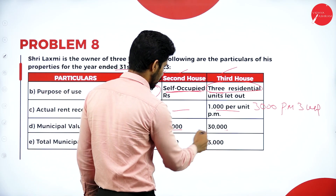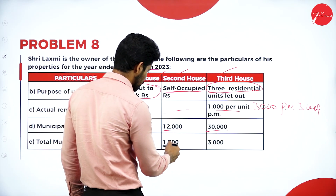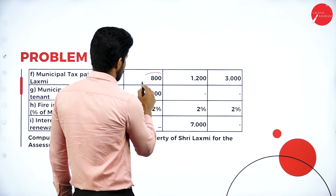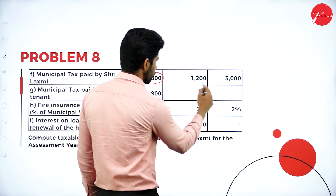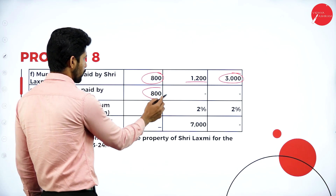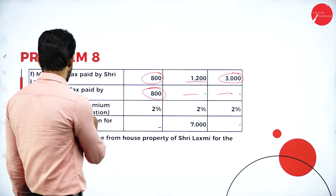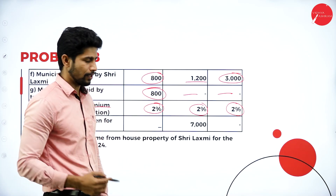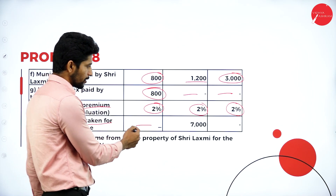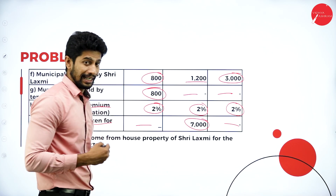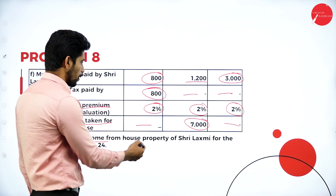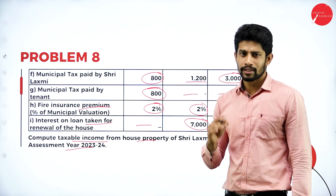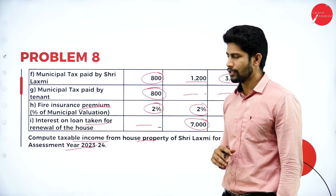Municipal value: 16,000 for house one, 12,000 for house two, 30,000 for house three. Total municipal tax is 1,600, 1,200, and 3,000 respectively. Sri Lakshmi paid 800 for house one, 1,200 for house two, and 3,000 for house three. The tenant paid 800 for house one; nil for houses two and three. Fire insurance premium is 2% on municipal valuation for all three houses. Interest on loan: nil for house one, 7,000 for house two, nil for house three. Compute the taxable income from house property of Sri Lakshmi for assessment year 2023-24.